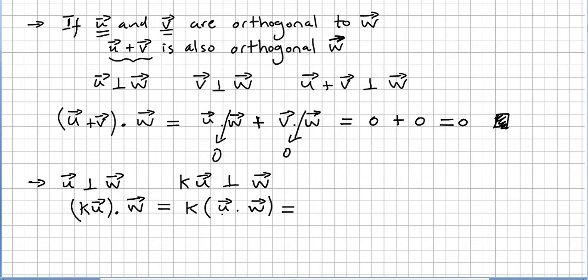w, right? But u is orthogonal to w, so u times w is zero. So this is k times zero. So this is zero. So if u is orthogonal to w, any scalar multiple ku is also orthogonal to w.